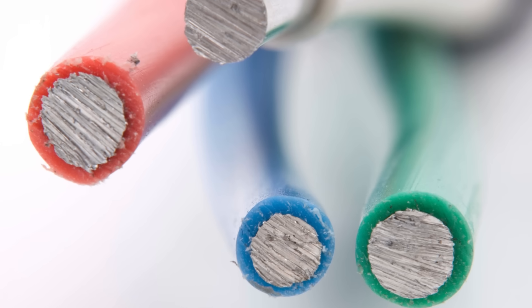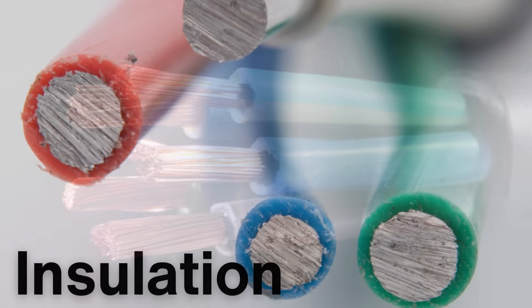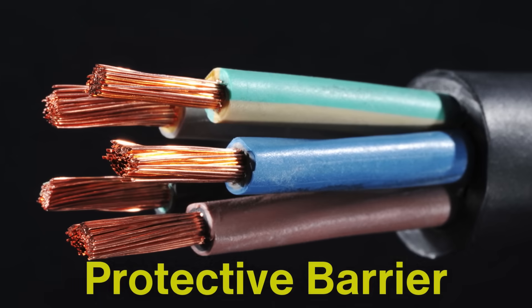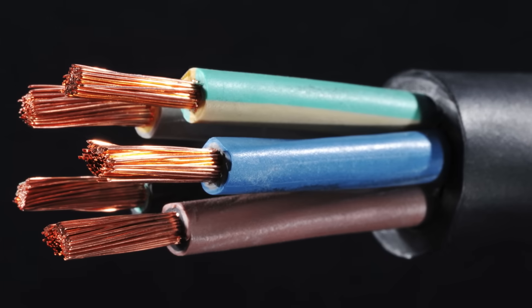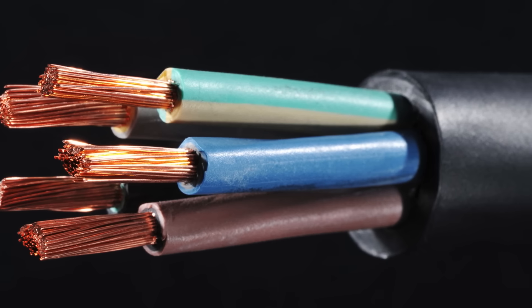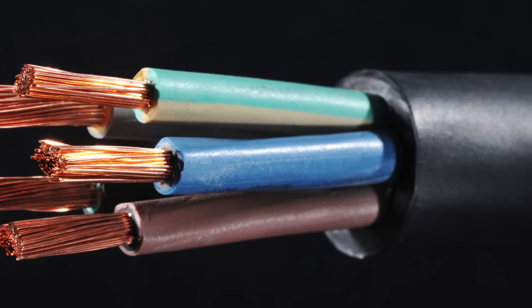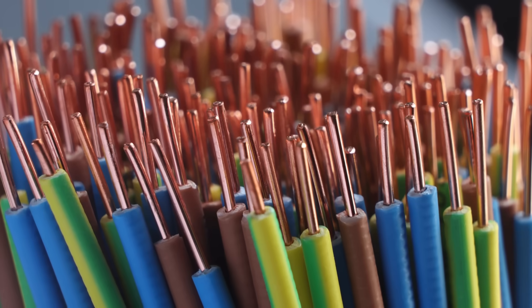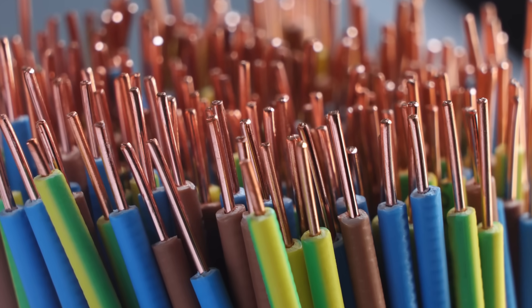With the conductor ready, the next stage is insulation. Insulation serves as a protective barrier, preventing electrical currents from escaping the wire and protecting users from shocks. The materials used for insulation vary depending on the application.